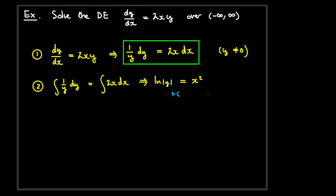Now, what do we do about the arbitrary constants? If we had put constant c on one side and d on the other, we could shift them to get d minus c on one side. Since d and c are both arbitrary constants, their difference is also an arbitrary constant, so we can just write a single constant c. Now we have an expression involving only y equal to an expression involving only x.